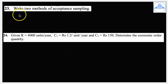23rd question: write two methods of acceptance sampling. First we have Single Sampling Plan, or SSP. And second we have Double Sampling Plan, DSP.